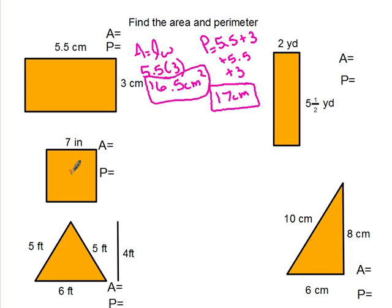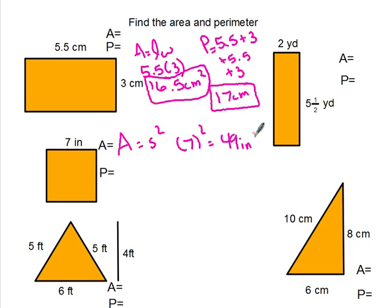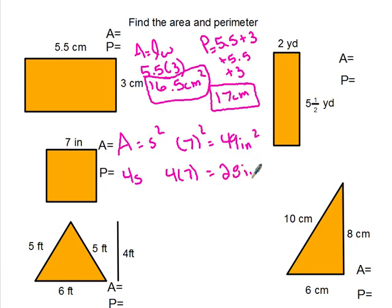The next one's a square. Area equals side squared, so it's 7 squared, which is 49. And perimeter is just 4 times the side: 4 times 7 equals 28 inches.